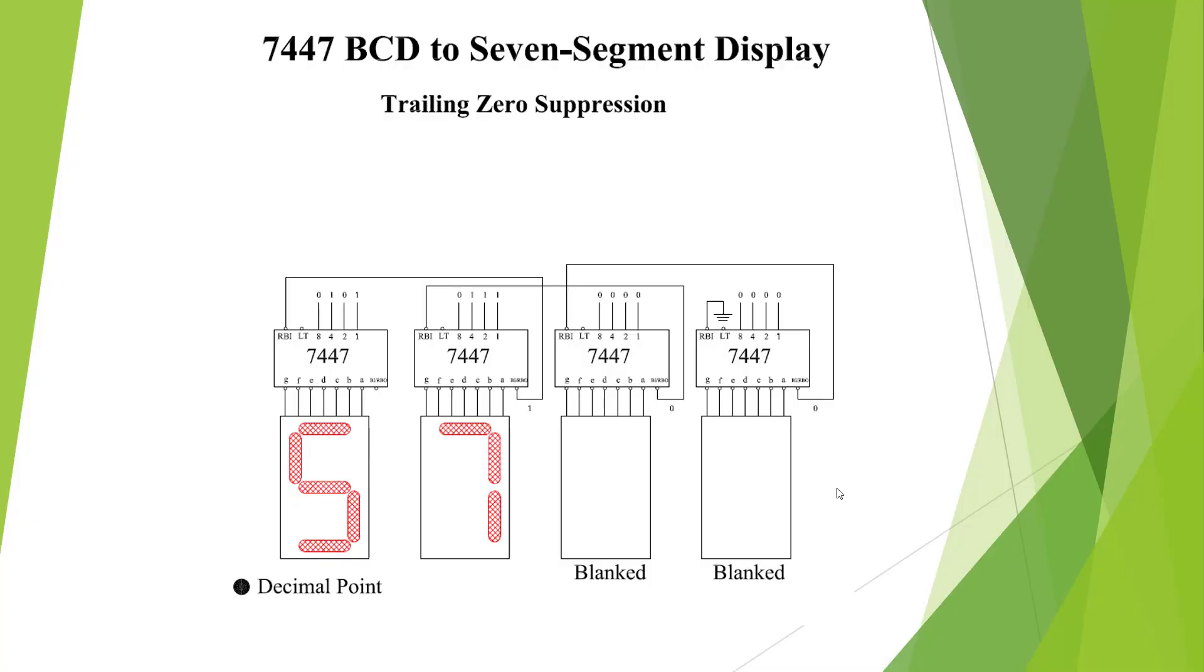Here's the other function of the ripple blanking. Here we want to blank out the trailing digits. So we're going to put a low into RBI at the least significant digit. It's 0, so the RBO is going to be 0, which is going to go to the next RBI. Its input is 0, so it's going to blank.